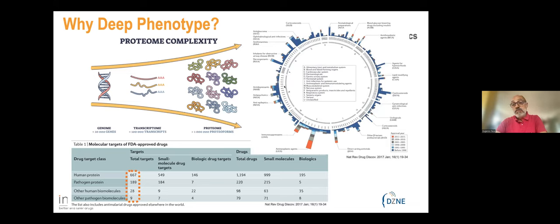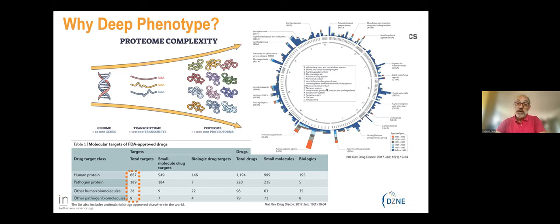If you look at disease areas — for example, neurology — there is very little: mostly antidepressants, some drugs for Parkinson's, nothing for Alzheimer's or ALS or anything else. So especially in our sector we are in dire need. Cancer and immunology are much more developed, but not all areas are targeted equally. There is still a lot of work to do, and I think we can improve by using more phenotypic approaches.